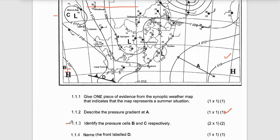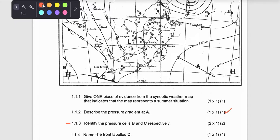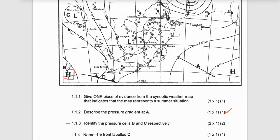Let's move to 1.1.3: Identify the pressure cells B and C respectively. What are the high pressure cells B and C? Let's start with pressure cell B. The pressure cell represented by B is the South Atlantic high pressure cell.